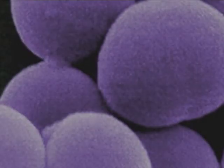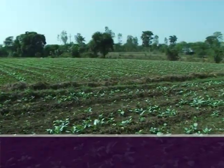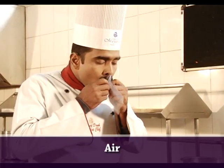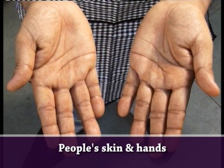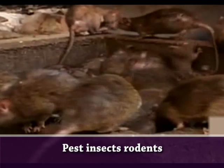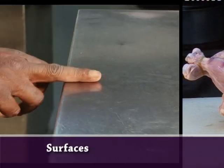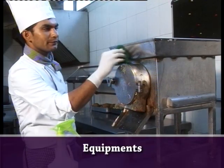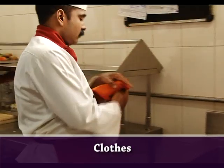Bacteria can be found everywhere, but especially in soil, air, people's skin and hands, pests such as insects and rodents, raw food, on surfaces, equipment, and cloths.